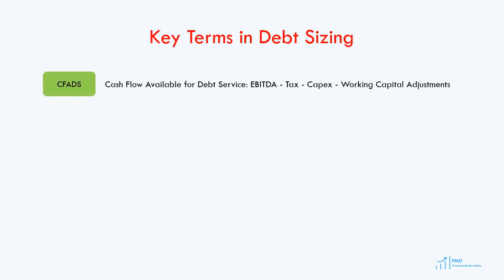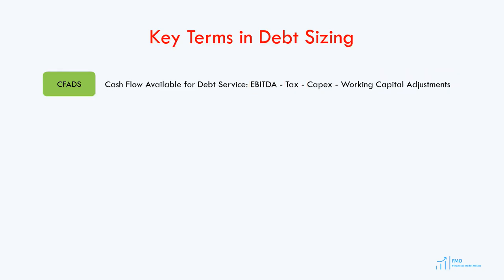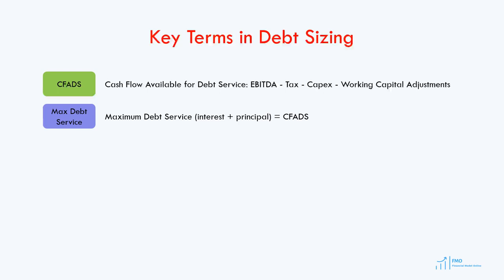CFADS is the cash flow available for debt service, and it is EBITDA less tax payments, less capital expenditures during operation, and less working capital adjustments. Essentially, CFADS represents operating cash flow available to pay the interest and repay the principal of the loan. Maximum debt service, which is a sum of interest and principal, is always equal to CFADS.